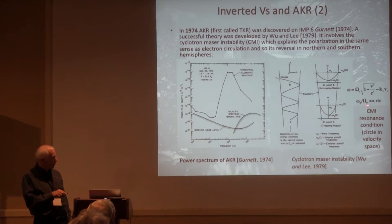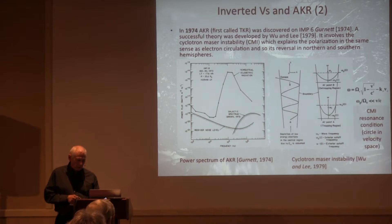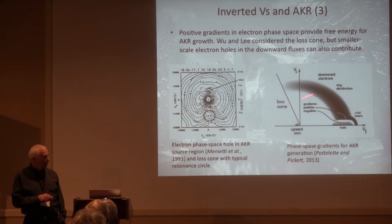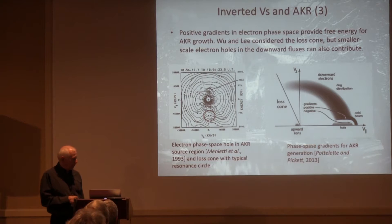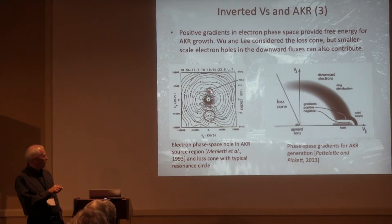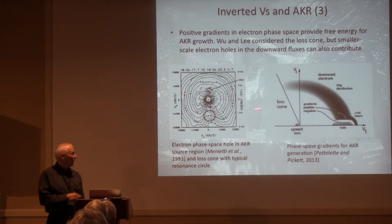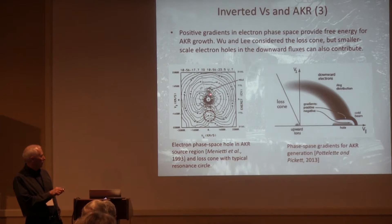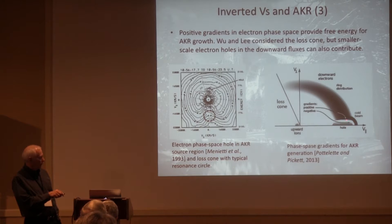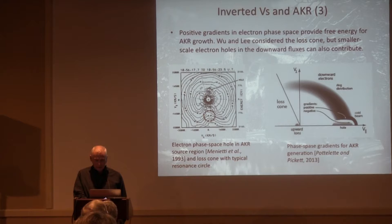You have this resonance condition — it's an ellipse, but in this limit it's a circle in velocity space. What Wu and Li had in mind was the loss cone distribution. Doug Menietti and I were working on this, trying to look at electrons right in the AKR region, which we did. There's probably also another feature called the electron hole. Electron holes have been studied a lot since then. The beam is up here — the auroral beam — but the hole is in here, and we see these generally when we're in the AKR region. So still in 1993, people are talking about phase space gradients for AKR, still discussing the lost cone and electron hole — I think it was nailed down, but not completely worked out.